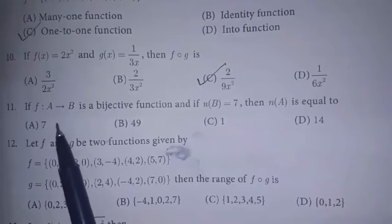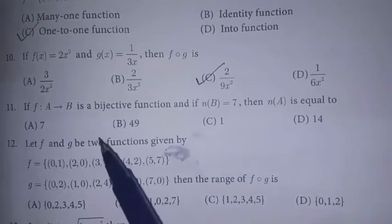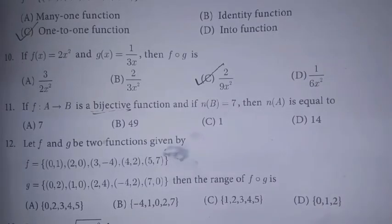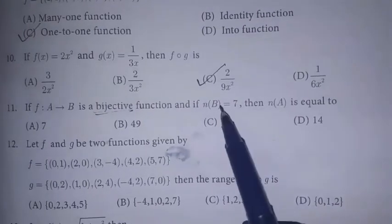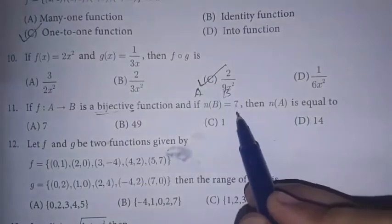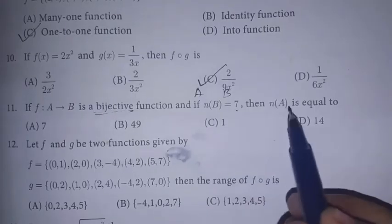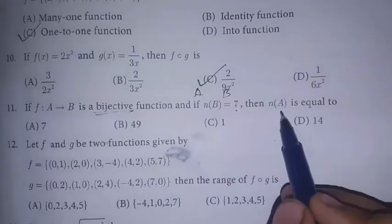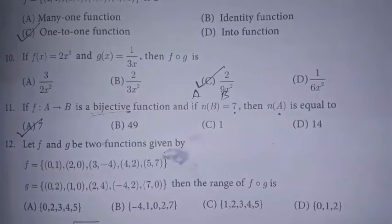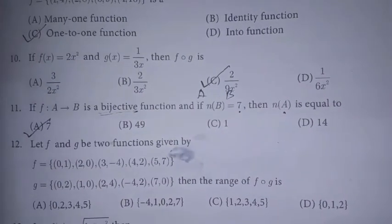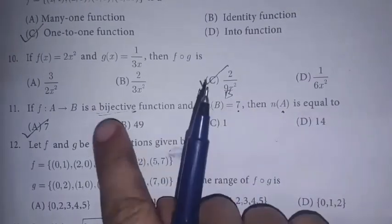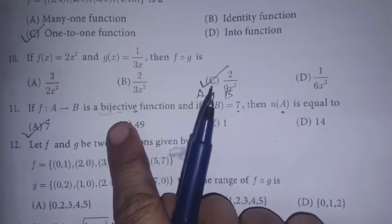f is a function from A to B, that is a bijective function. What is bijective? It is both one-to-one and onto. Now, if you have two sets A and B, there are 7 elements in B. Both sets are equal because in a one-to-one mapping it is one-to-one pair. So if B has 7 elements, then A also has 7 elements. This is one-to-one and onto.